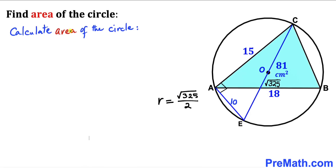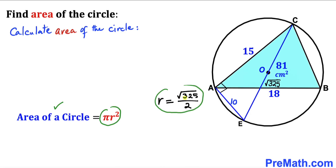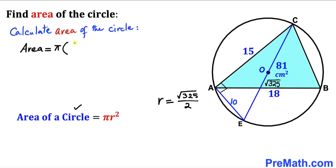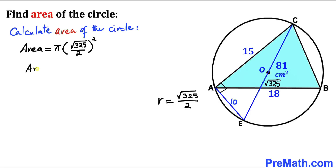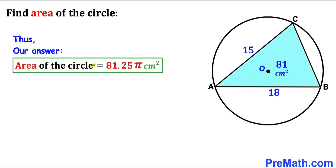Here's our final step. Let's calculate the area of this circle using the formula: area equals pi R squared. The radius R equals the square root of 325 divided by 2. So the area equals pi times the square root of 325 divided by 2, whole squared, which simplifies to 325 pi divided by 4, equal to 81.25 pi. The area of this circle turns out to be 81.25 pi centimeter square.